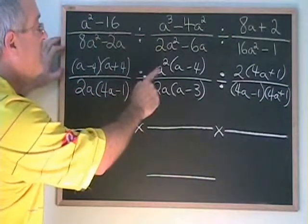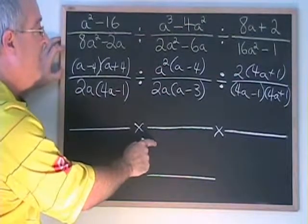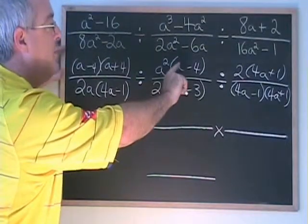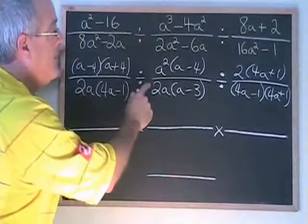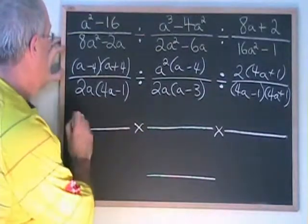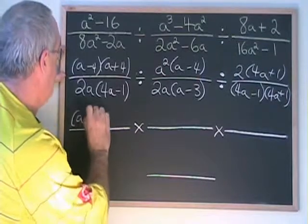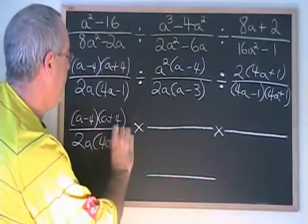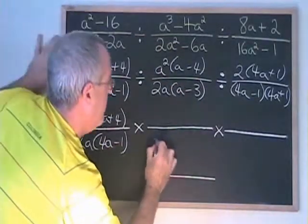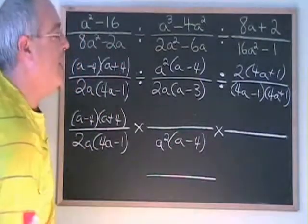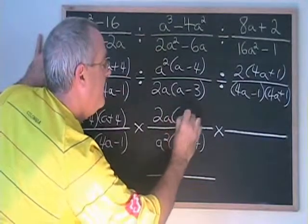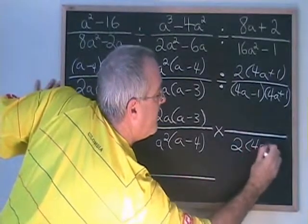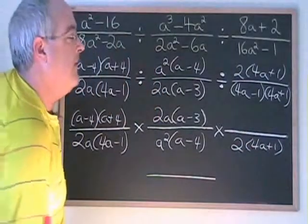The next step is we move down to the next line. Each division sign is replaced with a multiplication symbol, and the fraction after the division sign turns upside down. We can do this to both fractions at once. So over here we still have (a minus 4)(a plus 4) over 2a(4a minus 1). Here the a squared(a minus 4) moves to the bottom and the 2a(a minus 3) moves to the top. Here the 2(4a plus 1) moves to the bottom and the (4a minus 1)(4a plus 1) moves to the top.